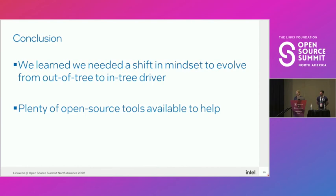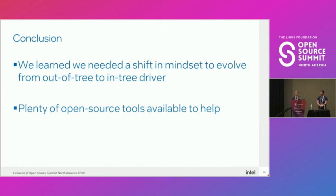The main points: code in the Linux kernel isn't exactly the same as out-of-tree code. When you're in the kernel and your audience is the world, you have to think differently about how you validate, design, and implement things — making everything as programmatically secure as possible so it can't accidentally be used in the wrong way. And there are plenty of open source tools available to help with any kind of validation you need to do.